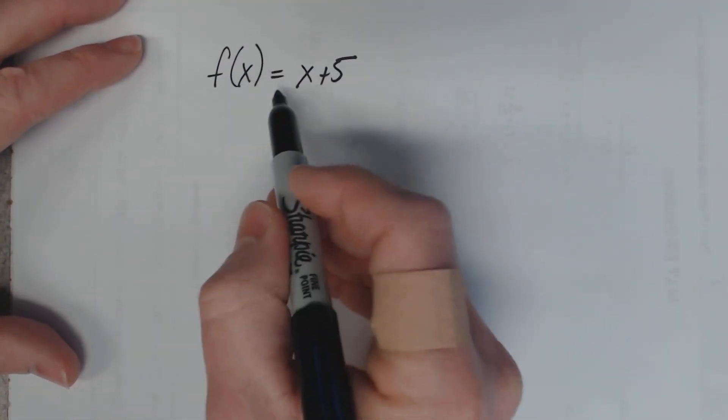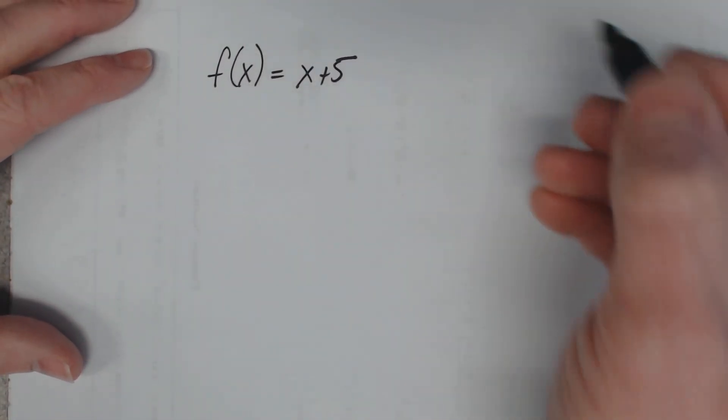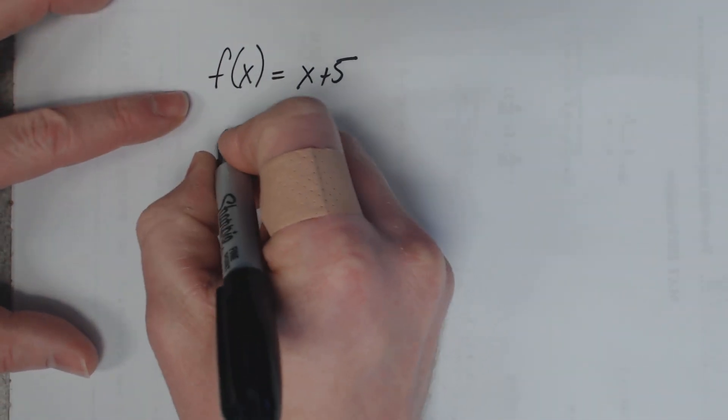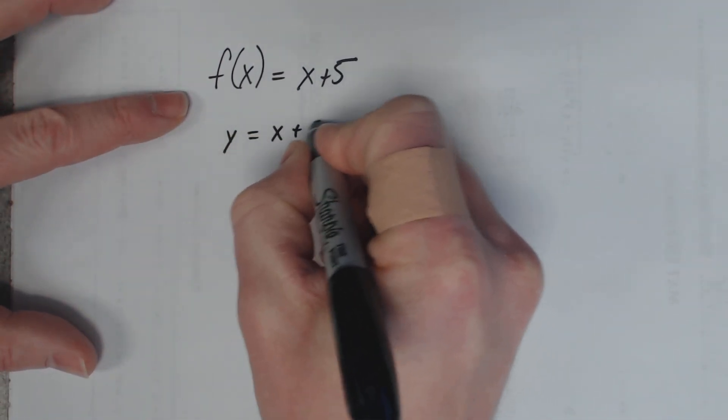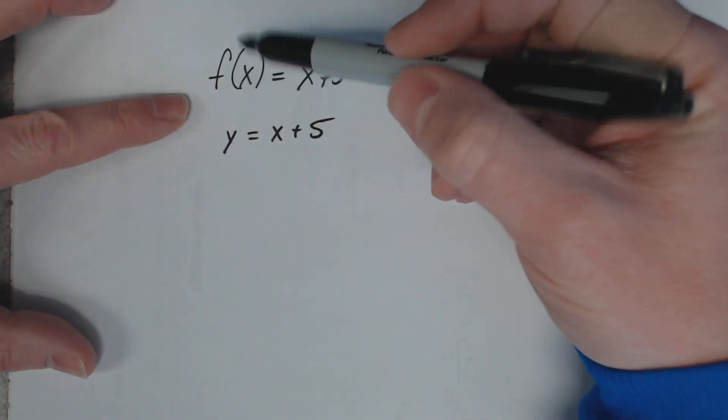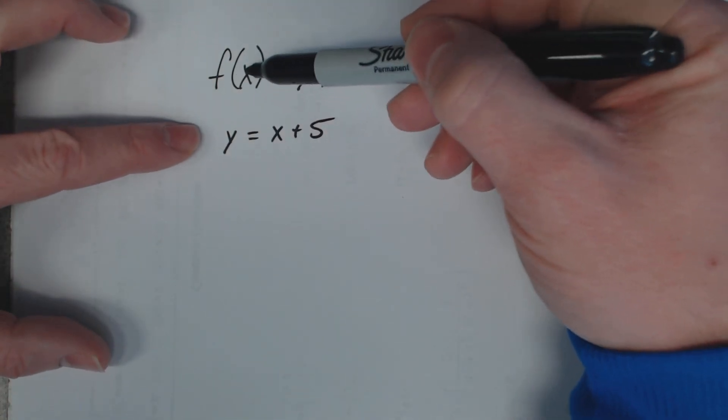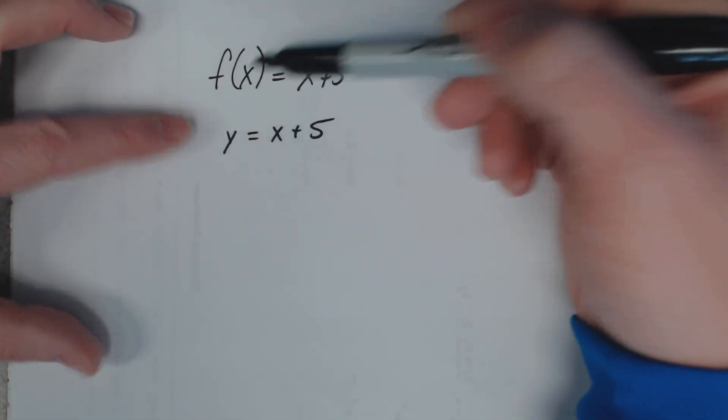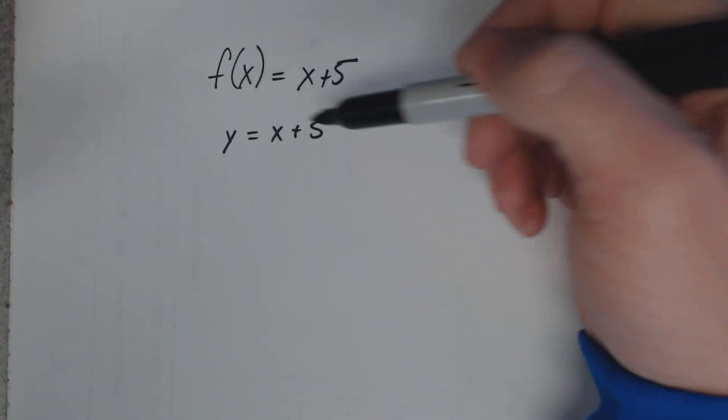Suppose you had a function here, f(x) = x + 5. That's the same thing as saying y = x + 5. Remember that f(x) and y are the same thing. They're interchangeable when we're talking about function notation.